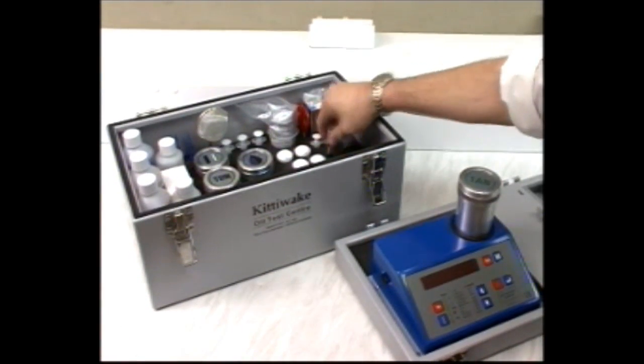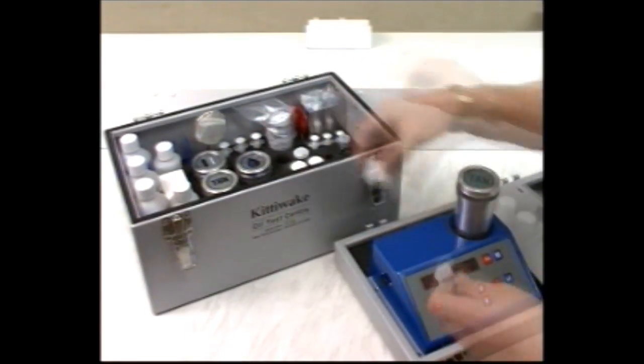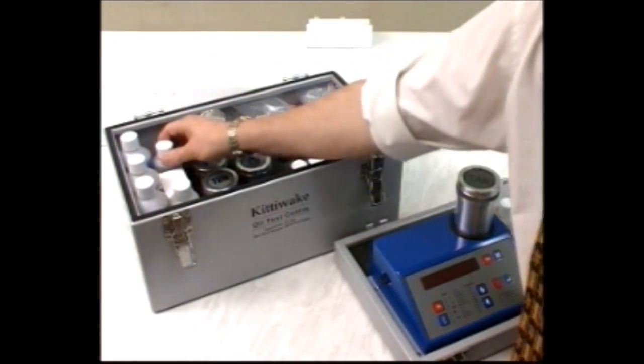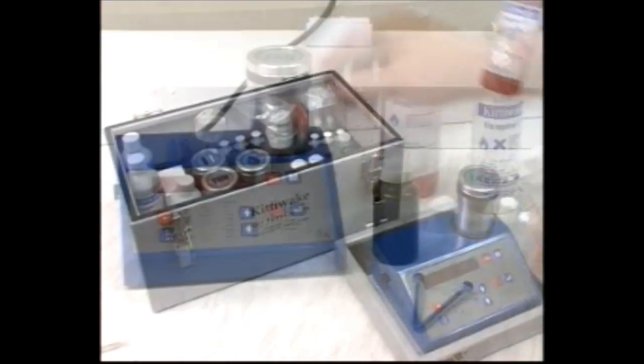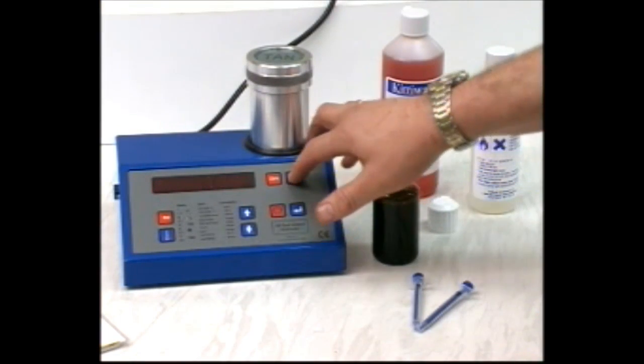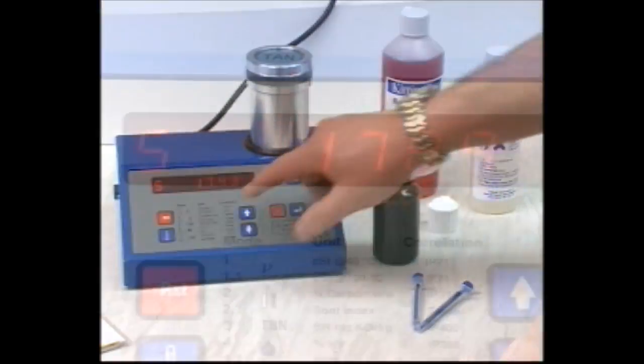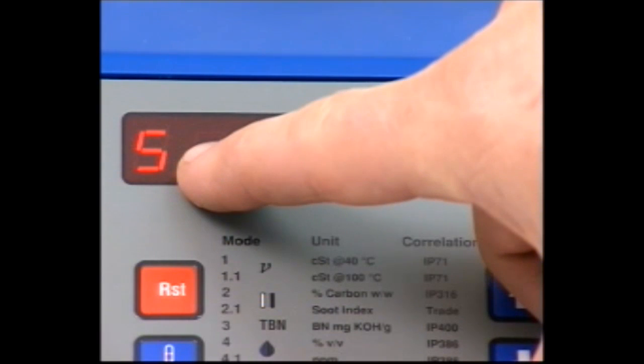This section shows how to measure the total acid number of a sample. Two modes are available on the unit. Use mode 5 for all mineral oils.